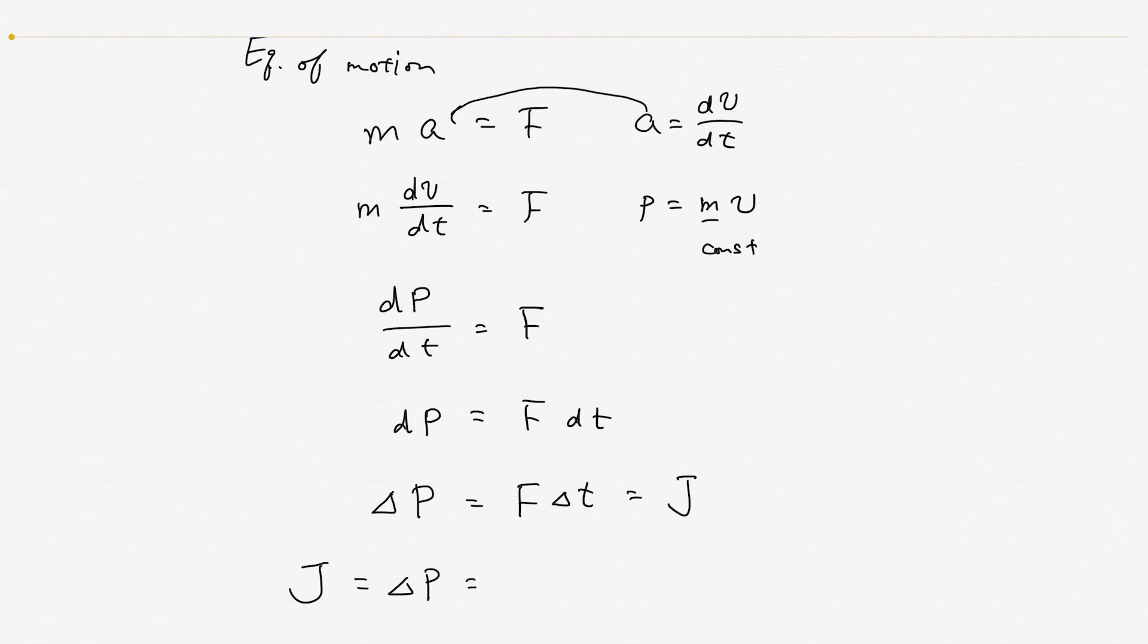So after the collision, the momentum is mv₂ minus the momentum before the collision. The direction of the velocity is negative, so you should put the negative sign, mv₁. So the change of the momentum is m times v₁ plus v₂. This is the impulse on the hitting ball. This is the answer to this question.